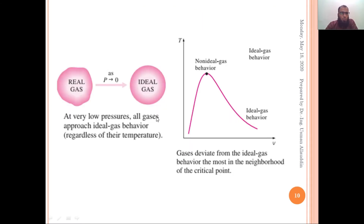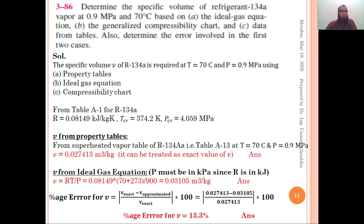To recall: at very low pressures all gases approach ideal gas behavior. Near the critical point or saturation regions there is non-ideal gas behavior. But in the low-pressure region, the ideal gas equation can be used with satisfactory accuracy.